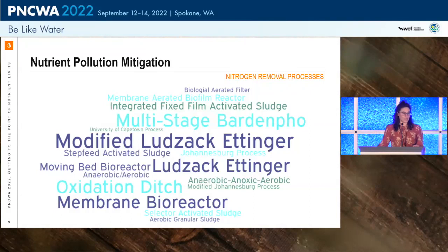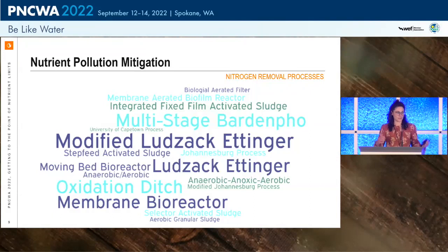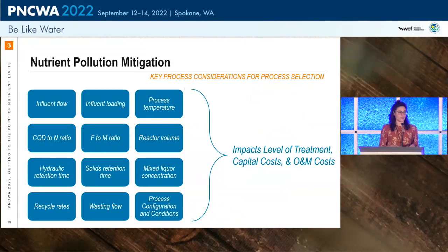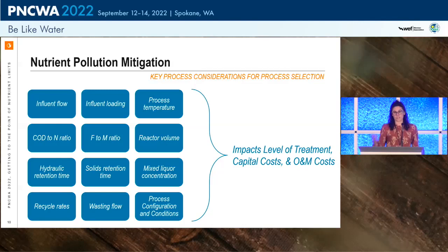This can be a lot to handle for utilities that don't necessarily have the expertise to understand what differs between an MLE process and a Bardenfoe, or whether you need a five-stage versus a four-stage Bardenfoe, or how an integrated fixed-film activated sludge (IFAS) process differs from MLE. All of these have specific key process considerations: influent flow, loading, process temperature, COD to N ratio, F to M ratio, reactor volume, hydraulic retention time, solid retention time — and the list goes on. There are many factors that play into the level of treatment achievable, as well as capital and O&M costs.